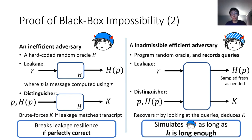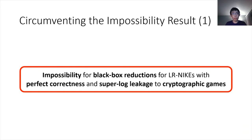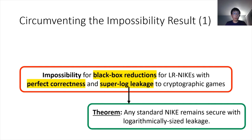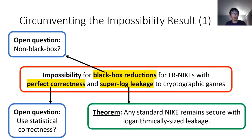This gives our impossibility result. In particular, it deals with black-box reductions and schemes that have super-logarithmic leakage and perfect correctness. Those three points can actually be seen as limitations of the black-box impossibility result. In the case of small leakage, we can show that any NIKE remains secure if the leakage is sufficiently small. However, in terms of non-black-box reductions or statistical correctness, we do not have any constructions, and we leave as open questions the construction of leakage-resilient NIKEs using either non-black-box reductions or schemes that are only statistically correct.